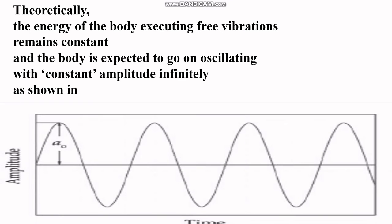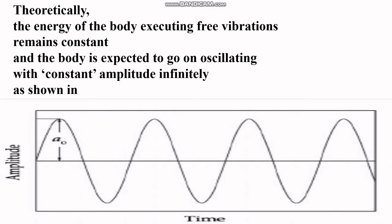Theoretically, the energy of a body executing free vibrations remains constant and the body is expected to go on oscillating with constant amplitude infinitely, as shown in this graph. This displacement-time graph shows that the amplitude of the vibrations is not changing — it remains constant. When a body executes free vibrations, the amplitude of vibration always remains constant.